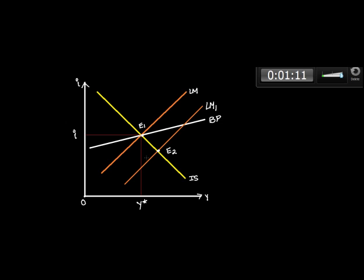As RBI buys Indian rupee, money supply is decreased. The LM curve moves to the left and it will move to the left till when? Till its initial position, that is at the point where again three curves will intersect together.